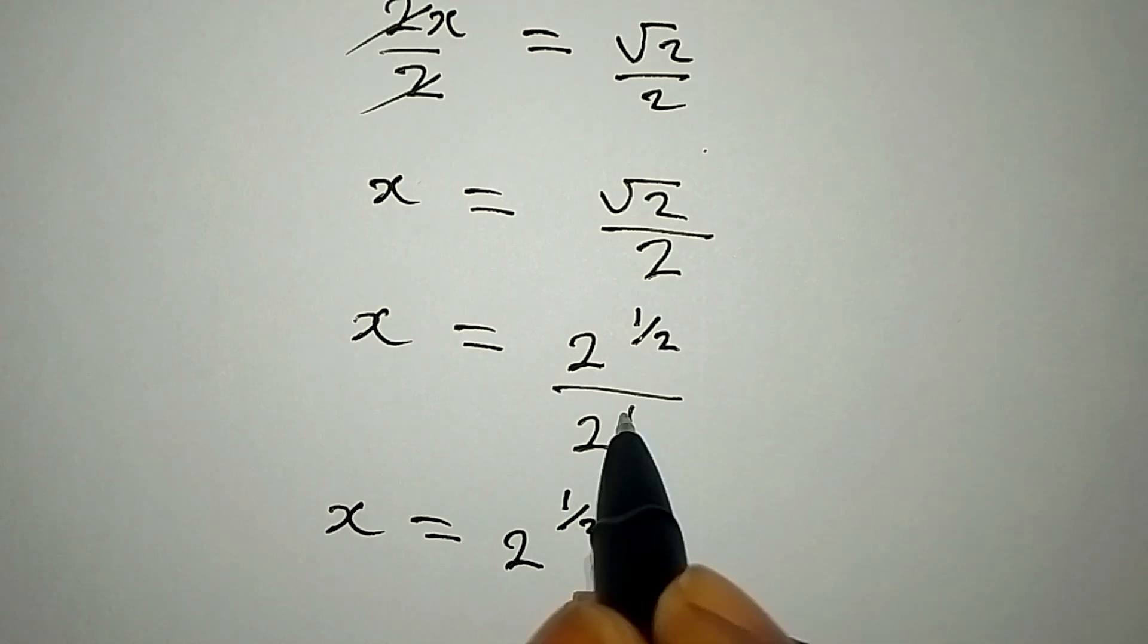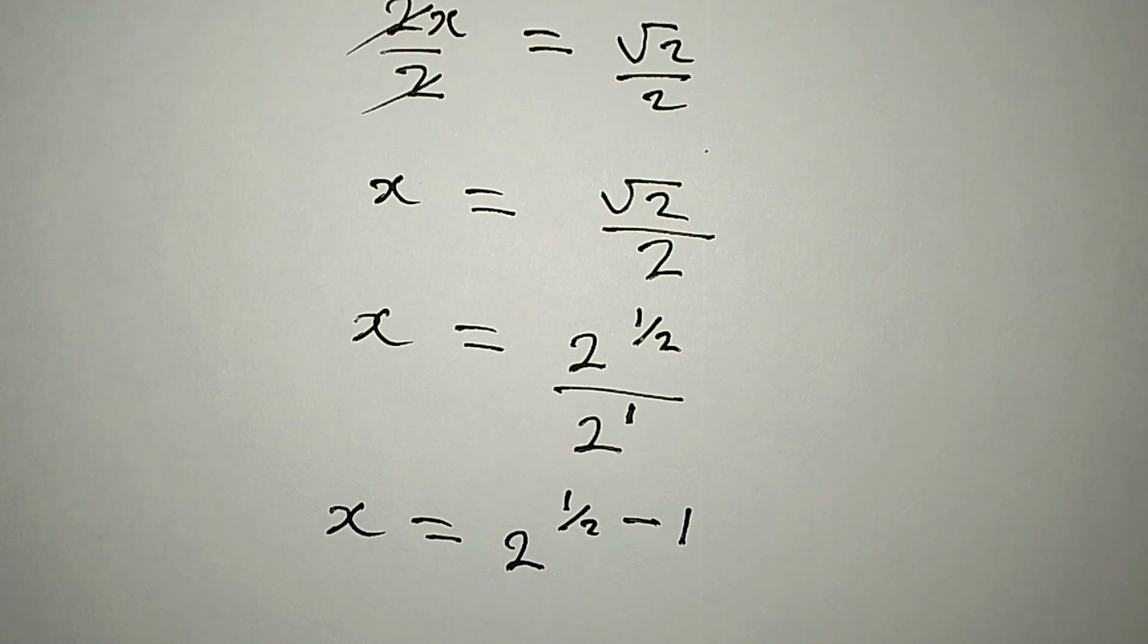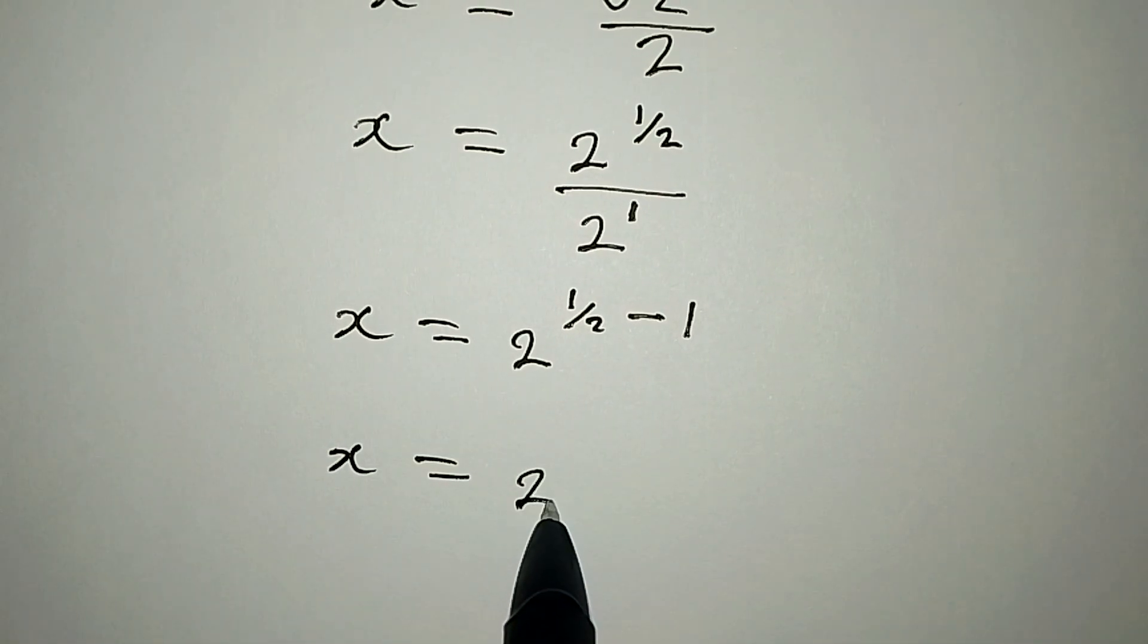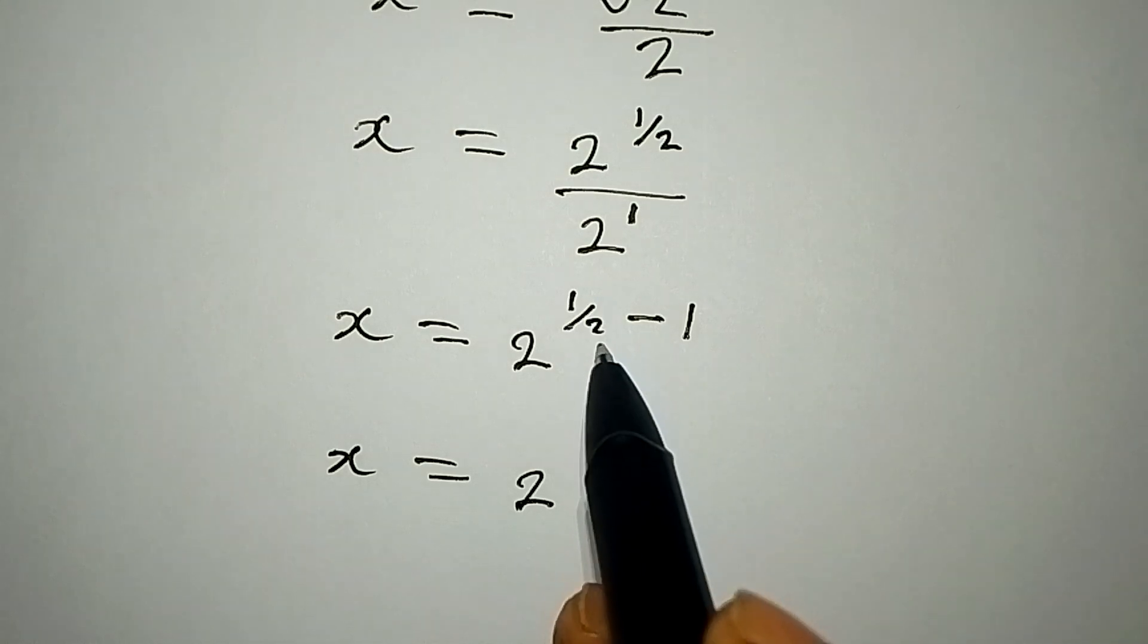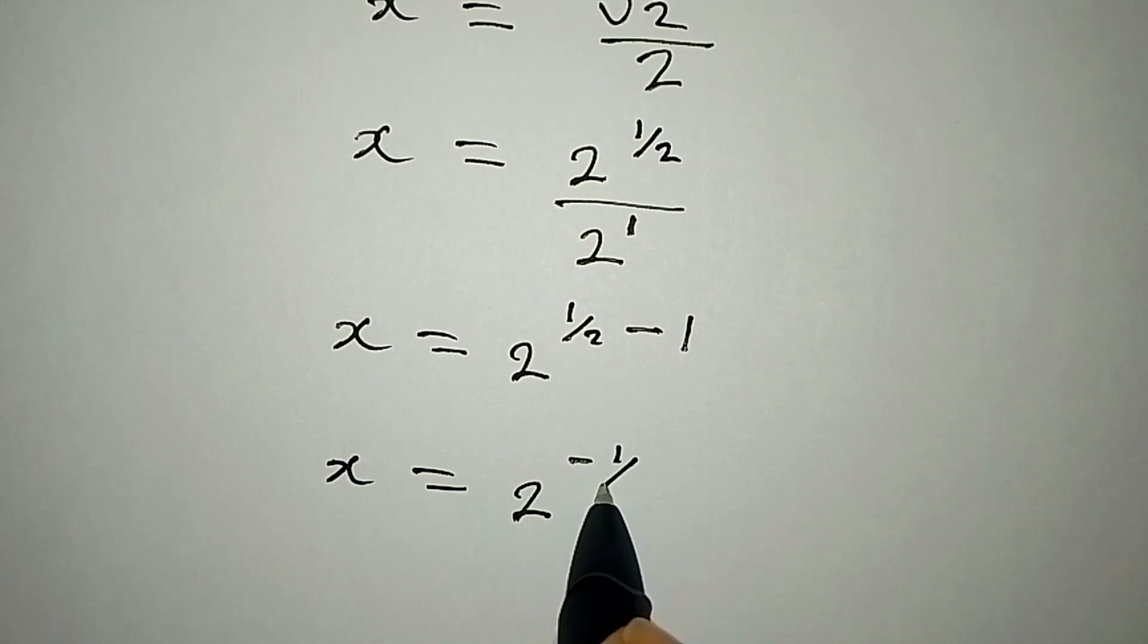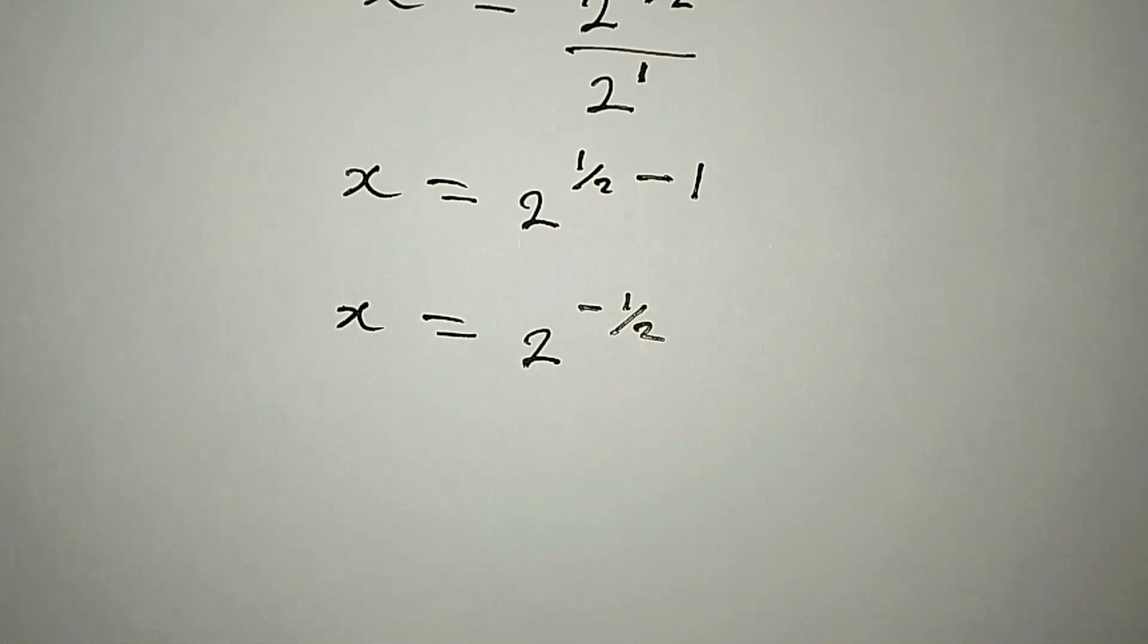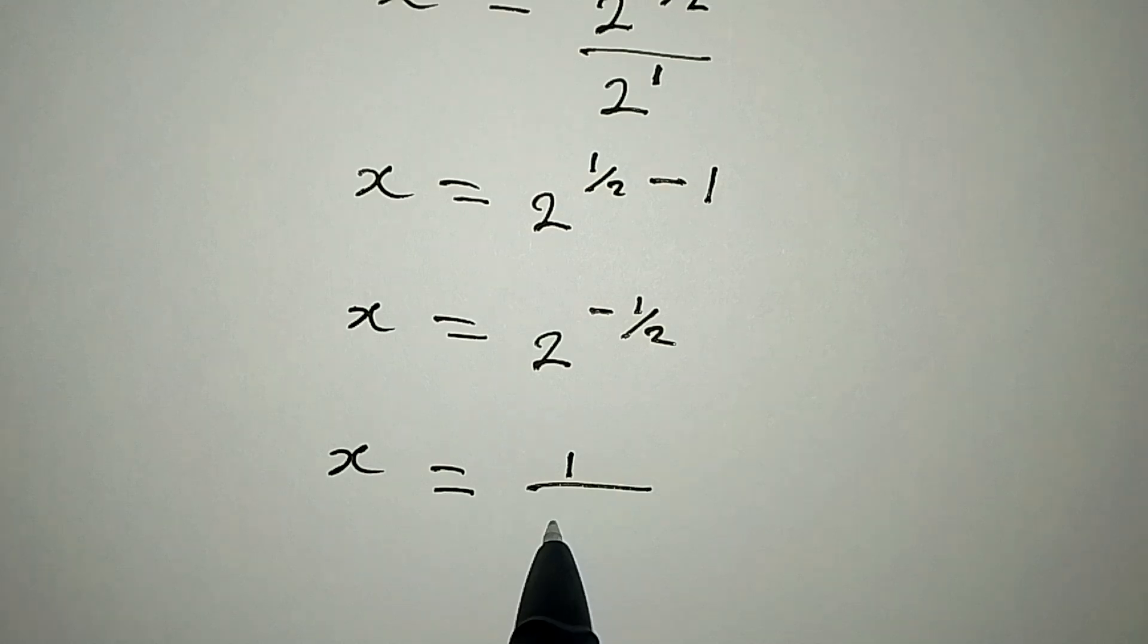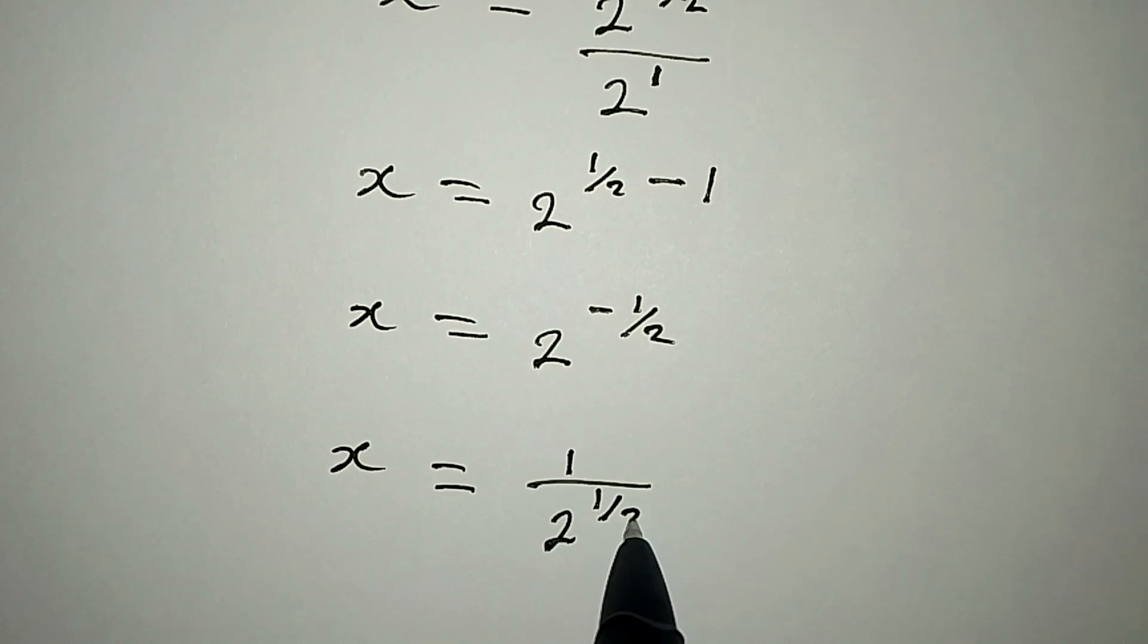So we have 1, then to continue, x will be equal to 2 to the power of negative 1 over 2, and this means that x is equal to 1 all over 2 to the power of 1 over 2.